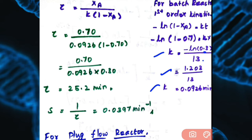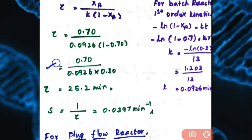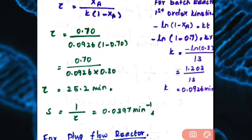So K = 0.0926 min⁻¹. Now substituting all known values: tau = 0.70 / [0.0926 × (1 − 0.70)] = 0.70 / [0.0926 × 0.30]. Simplifying, space time tau = 25.2 minutes. Space velocity S = 1/tau = 1/25.2 = 0.0397 min⁻¹.